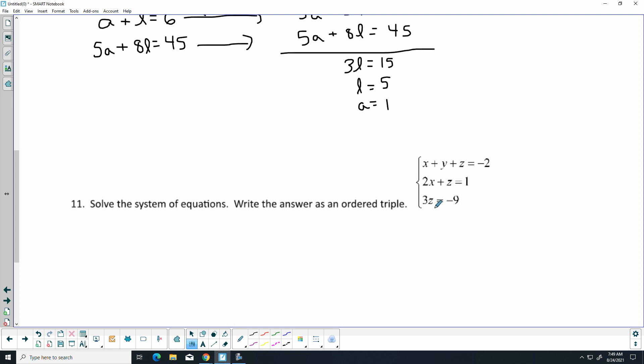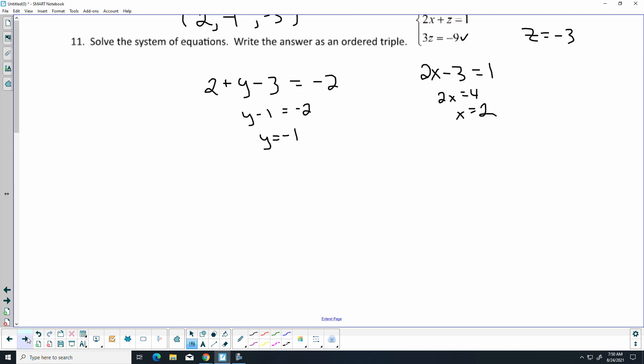Solve the systems, don't overthink this one, I'm going to start right there, and I get Z is negative 3, so that tells me one of my answers, then I'm going to plug it into the middle one, 2X minus 3 equals 1, X is 2. Well, we know X and we know Z, let's find Y, so 2 plus Y minus 3 equals negative 2, Y minus 1 equals negative 2, it looks like Y, add 1 to both sides is negative 1.